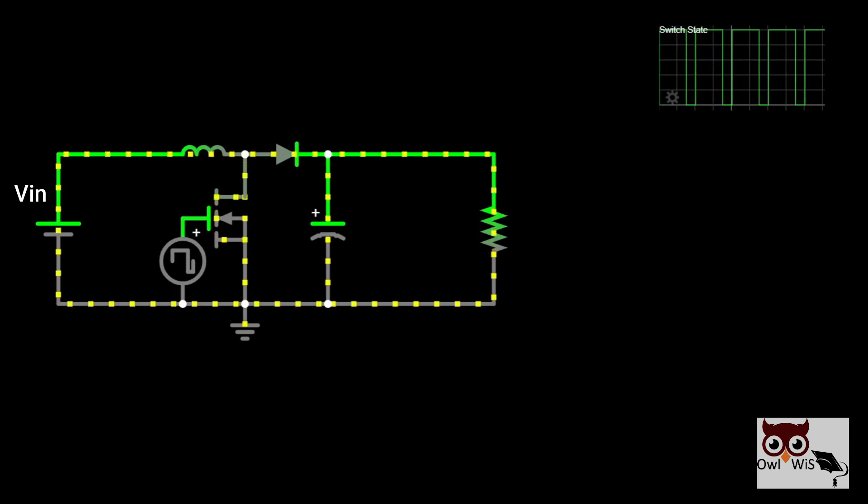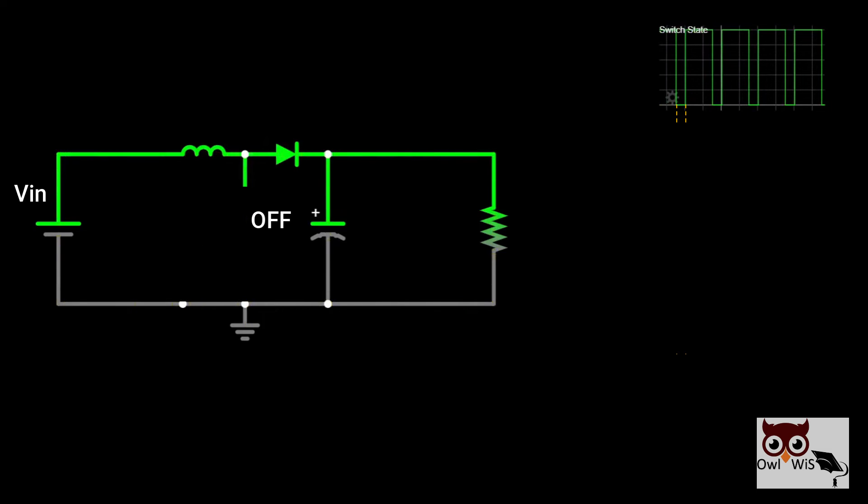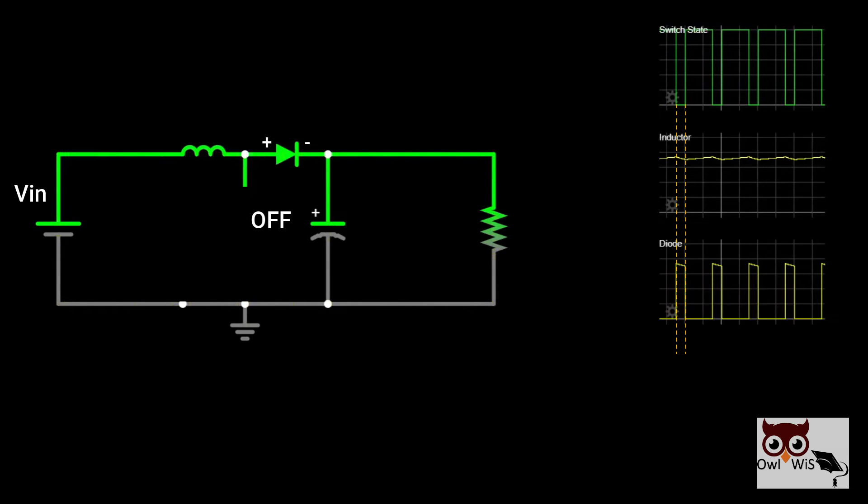When the transistor switch is open (off state), diode is forward biased. The energy stored in the inductor is released through the capacitor and is dissipated in the load resistance. The flow of current is in the same direction through the load, also stepping up the output voltage, as the inductor is now also acting as a source in series with the input source.